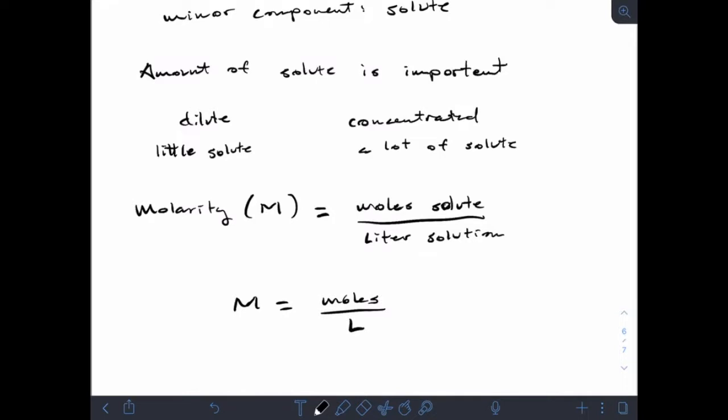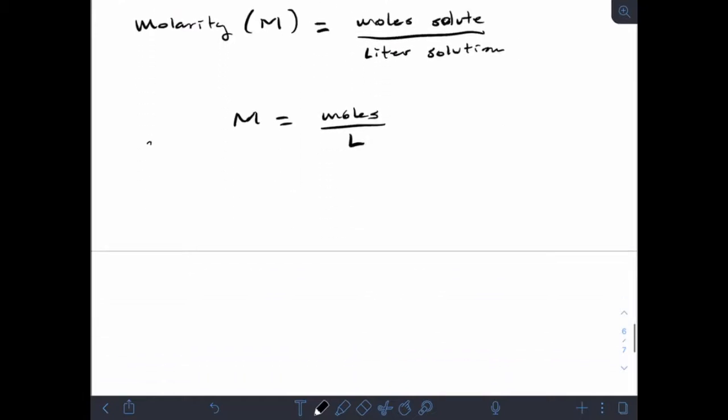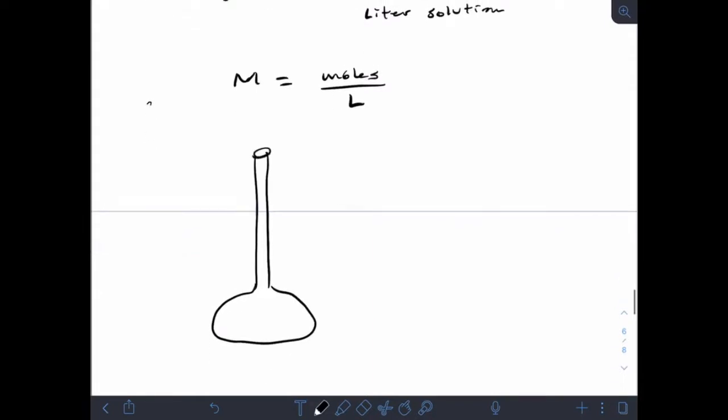The important thing to latch on to is that molarity is moles per liter. I'm going to say it a lot - moles per liter, moles per liter, moles per liter. What are the units of molarity? Moles per liter. So, for example, if I have a volumetric flask, this is a very long necked, very wide bottomed volumetric flask. A volumetric flask will have a mark somewhere on the neck that denotes the exact volume. In this case, I'm going to talk about a one liter volumetric flask.